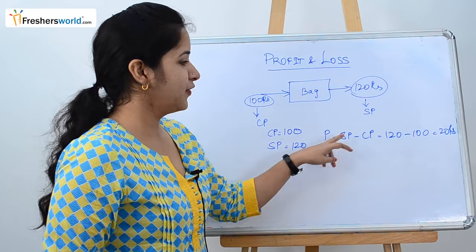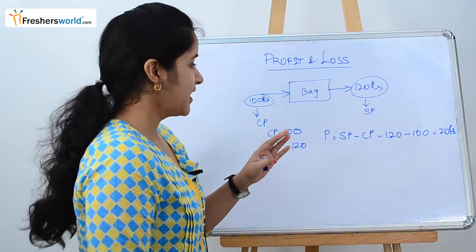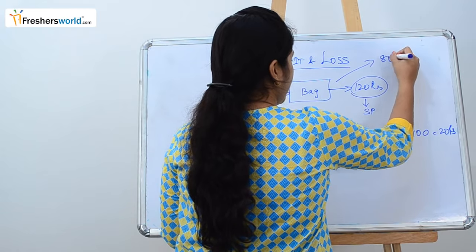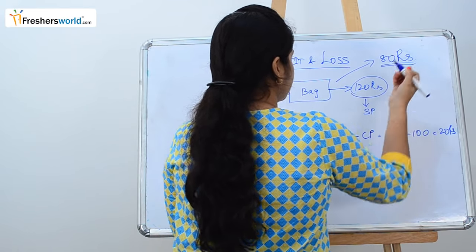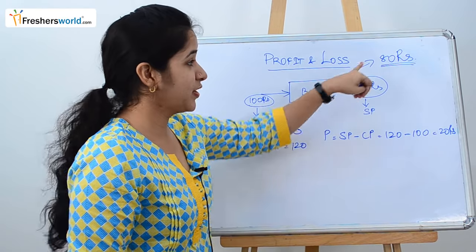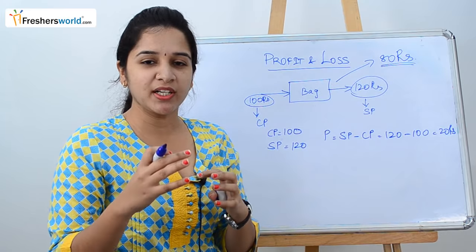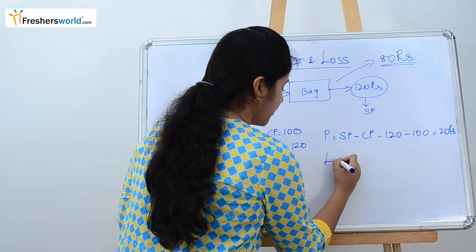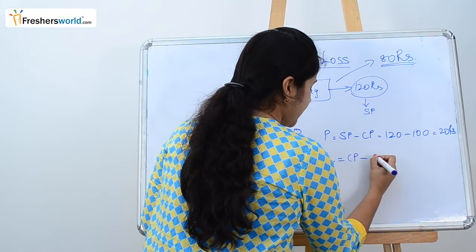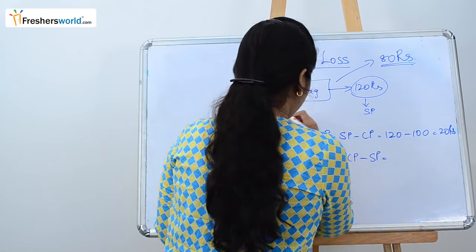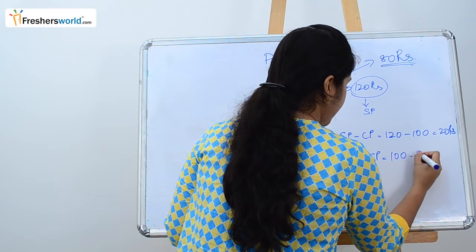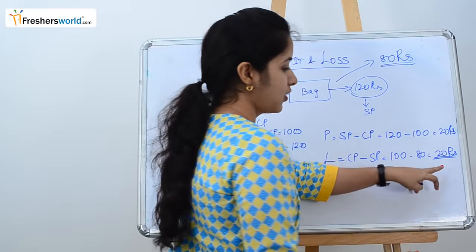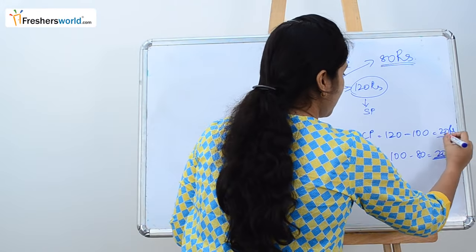Now if you got the bag for 100 rupees but are selling it for 80 rupees, that is 20 rupees less than your cost price, which is a loss. Loss is calculated as cost price minus selling price, which is 100 minus 80, equal to 20 rupees.